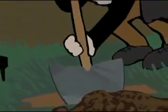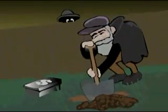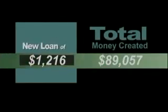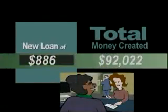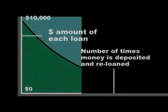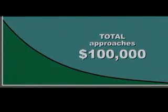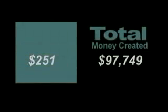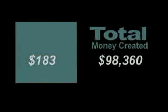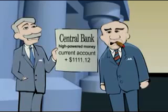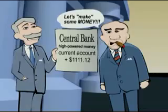Now, if the loan money created is not deposited at the bank, the process stops — that's the unpredictable part of the money creation mechanism. But more likely, at every step the new money will be deposited at a bank, and the reserve ratio process can repeat itself over and over until almost $100,000 of brand new money has been created within the banking system. All of this new money has been created entirely from debt, and the whole process has been legally authorized by the initial reserve deposit of just $1,111.12, which is still sitting untouched at the central bank.